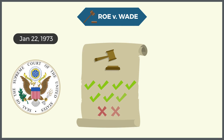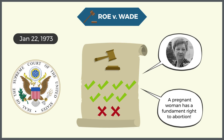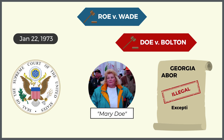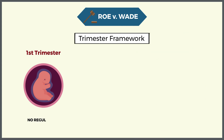The decision was made together with a closely linked case, Doe v. Bolton, regarding Georgia's abortion laws. The court also imposed a trimester framework as an attempt to balance women's rights to privacy and the state government's interests in protecting women's health and prenatal life.